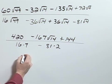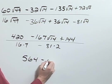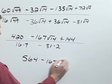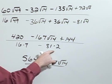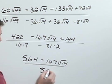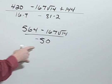Combining my terms on top gives me 564 minus 167 square root of 14, all over negative 50.